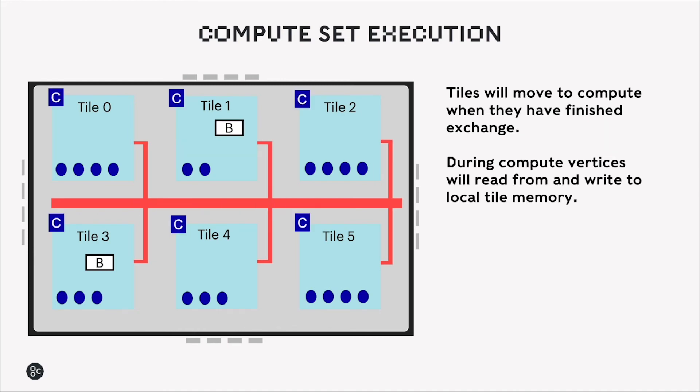Tiles will then move to a compute phase once the exchange is finished. During the compute phase, vertices will read from and write to only their own local tile memory. And we see here the inputs A and B are fed into a vertex on tile 1 and the output C. All of this is stored in the local memory on tile 1.